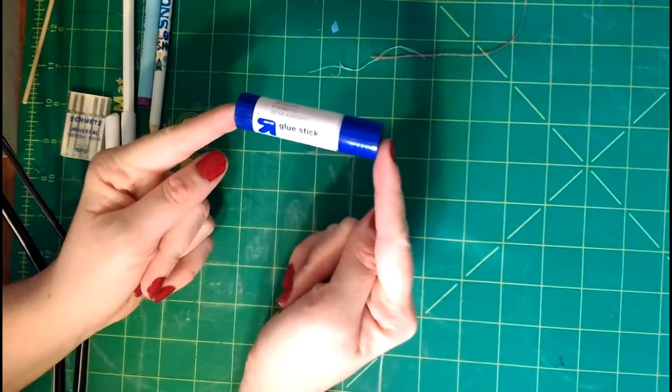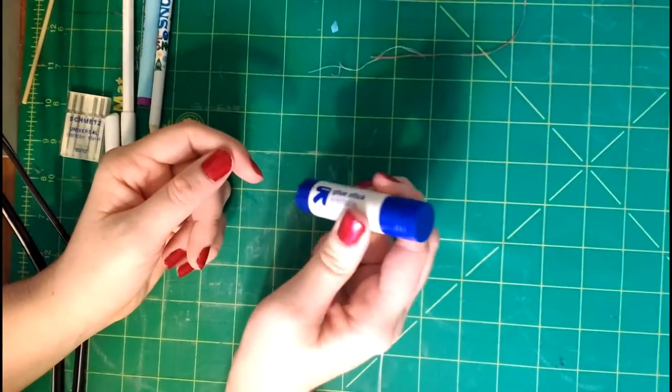A glue stick might seem weird in the sewing room, but if you're doing paper piecing or applique, it's really great to have.